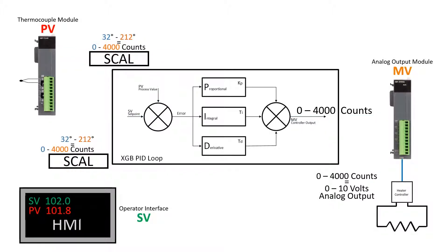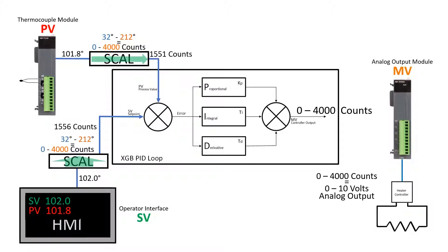To summarize: a set point value of 102 degrees is entered at the operator interface. From the scaling range we have programmed, the value to the SV of the loop is 1556. The scaled process value of 101.8 degrees from the thermocouple module is 1551. This value is used by the PID loop PV to calculate the error value used in the PID algorithm.